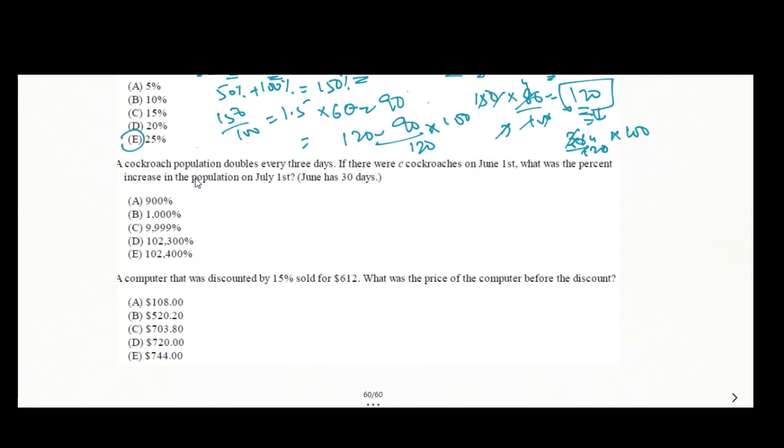Now, the next question is one that I am really worried about for all the students, because it's pretty basic, one can say that, but even after that, I know most of the students will be unable to solve it. I don't know why - is it the pressure of the exams, is it something else that prevents you from coming up with the appropriate answer? A cockroach population doubles every three days. If there were C cockroaches on June 1st, what was the percentage increase in the population on June 1st over here?